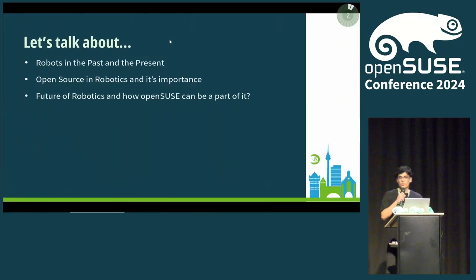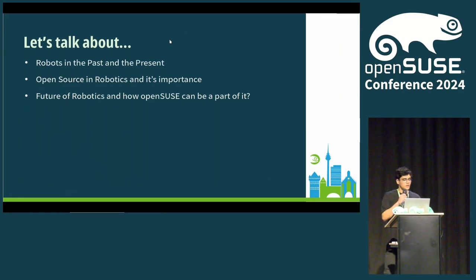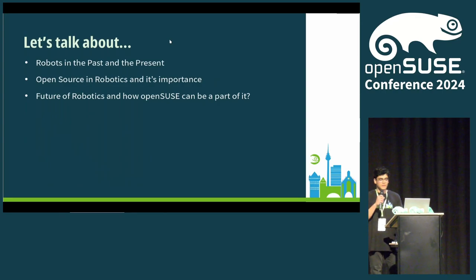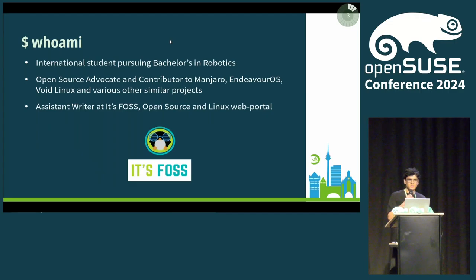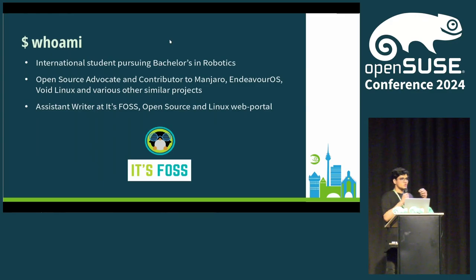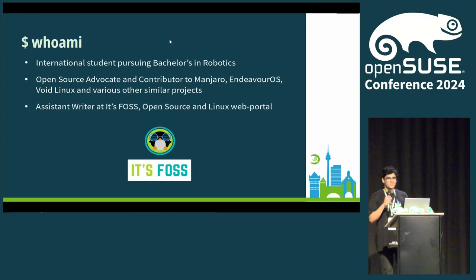I love to talk about robots, their past and the present, open source and robotics and why it's important, and finally the future of robotics and how OpenSUSE can be a part of it. Before we begin, a little bit about myself. I've been studying robotics for around a year now, here in Bavaria, and I really enjoy it since it lets me tinker with both software and hardware, and to see your software do real stuff in the physical world — it's really cool. Best of both worlds with robotics.